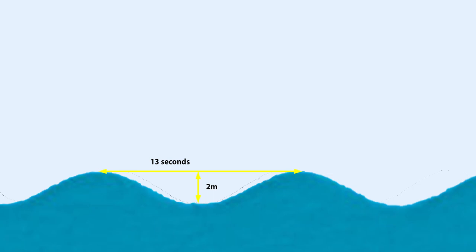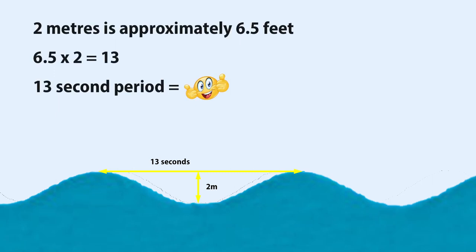A good rule of thumb for waves below about two and a half meters is to take the wave height in feet. So for a wave height of two meters — that's about six and a half feet — if the wave period is more than double the wave height in feet, you should be good to go. So for a two-meter wave we're looking for a period of 13 seconds or more. If I've got a wave period of over 13 seconds on a two-meter swell I should be good to go, with other considerations we'll talk about shortly.